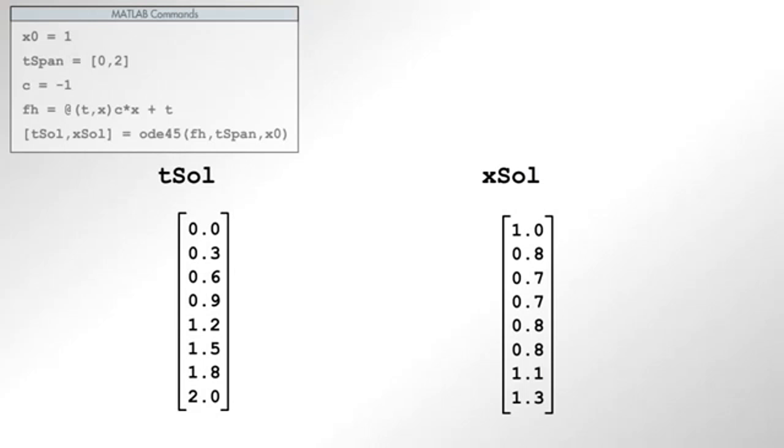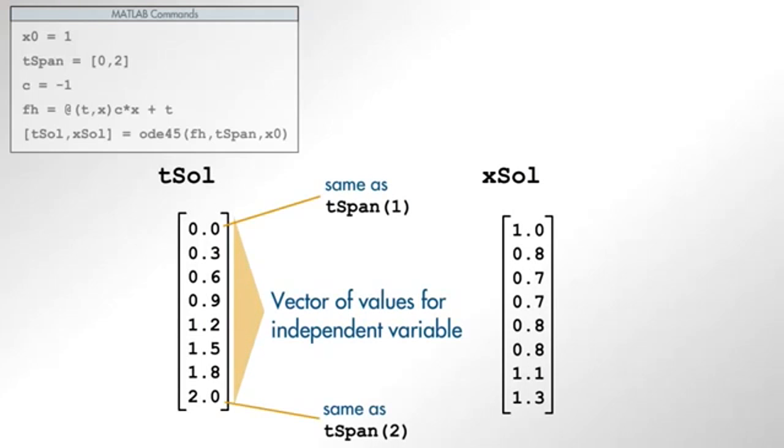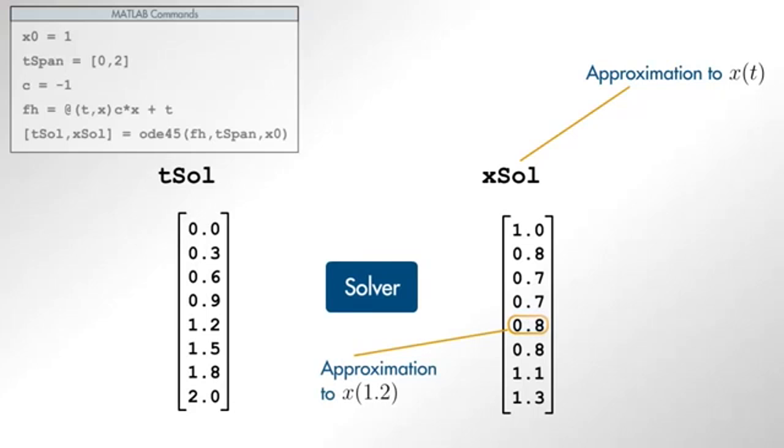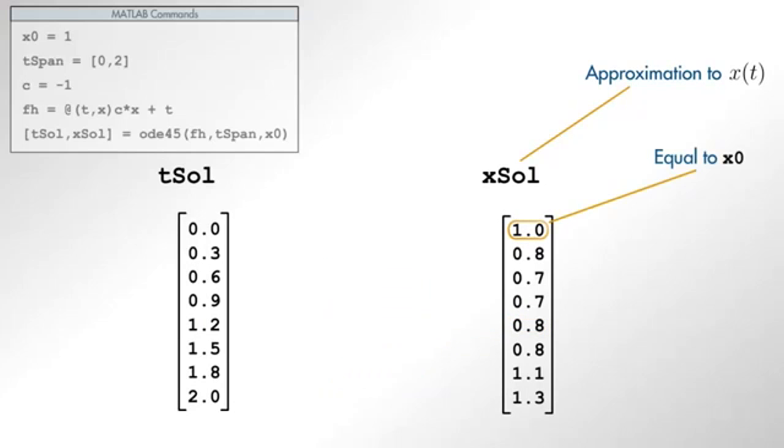The first output variable is a column vector of values for the independent variable. The second output variable is a column vector of the same size that contains the values of the approximate solution when evaluated at the corresponding values of the independent variable. In particular, notice that the first row of the second output is the same as the initial value.